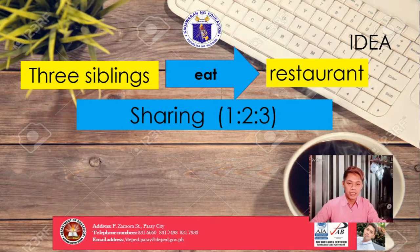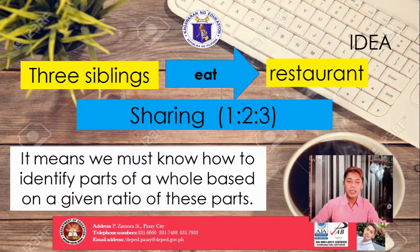Just imagine you go to any restaurant. If you have your sharing, that is their proportion — or let's say, that is their ratio: 1 to 2 to 3. Maybe in your part, that is 2 to 4 to 6. It means we must know how to identify parts of a whole based on a given ratio of these parts.